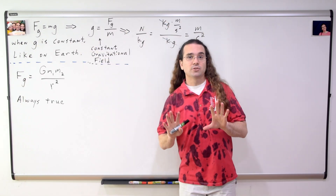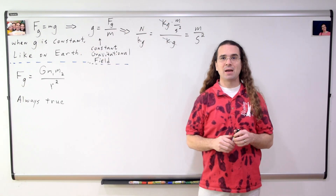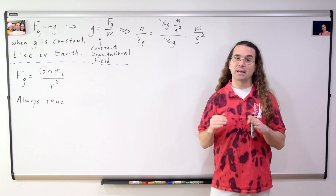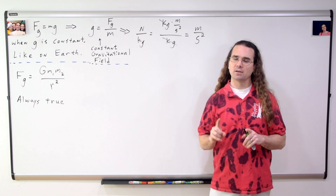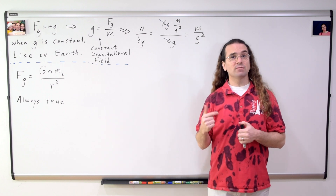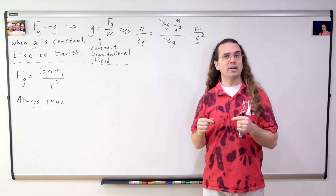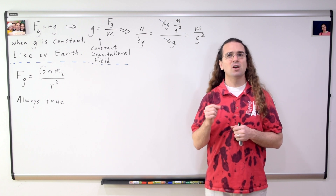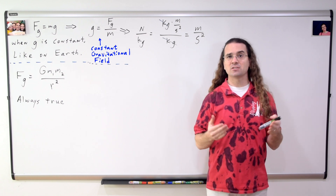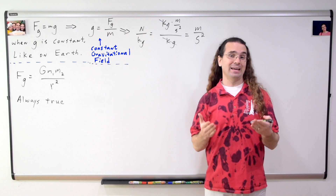Okay, so first off, newtons per kilogram is the same as meters per second squared. Second, the acceleration due to gravity equals the force of gravity divided by mass is the equation for a gravitational field when the gravitational field has a constant value like it does on planet Earth.